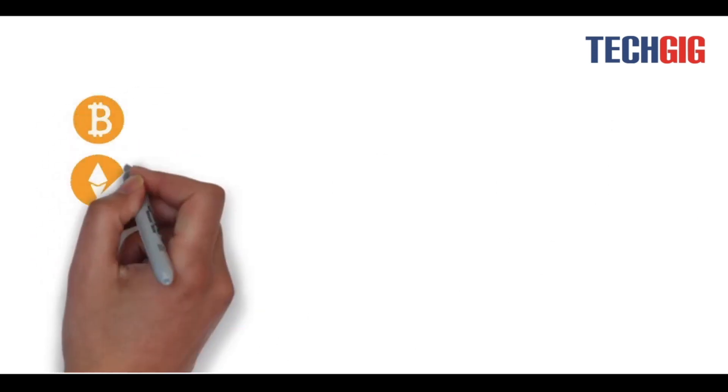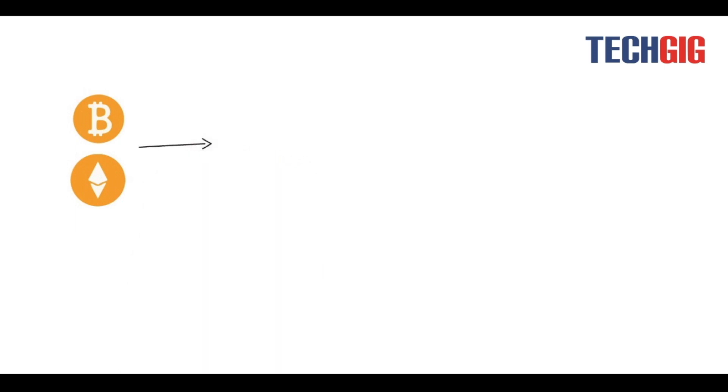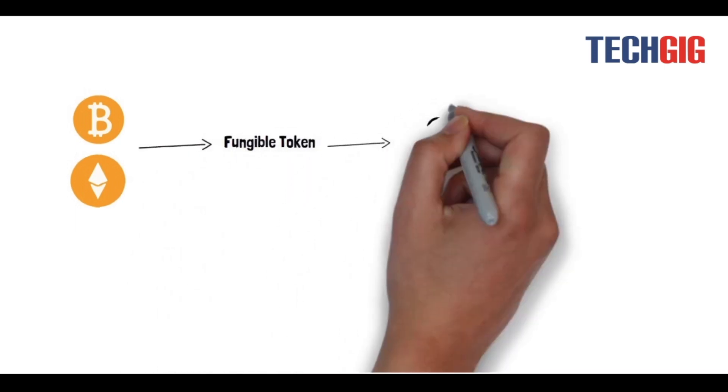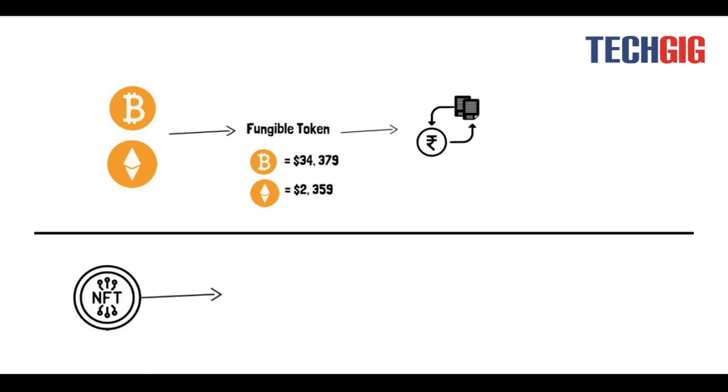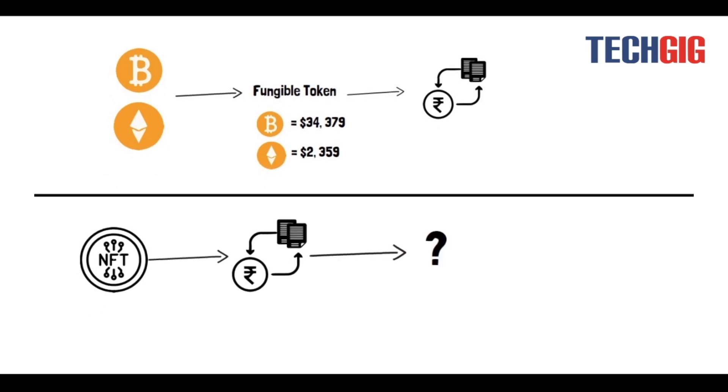Bitcoin and Ethereum are fungible tokens, which means if you trade Bitcoin and Ethereum for one another you have the same value or item in return, basically money. On the other hand, NFT is a unique token. Therefore, if you trade it, you may end up with something completely different in your hand.